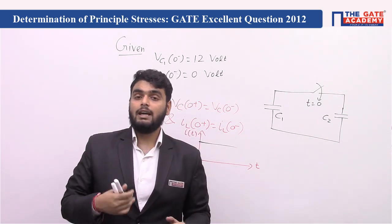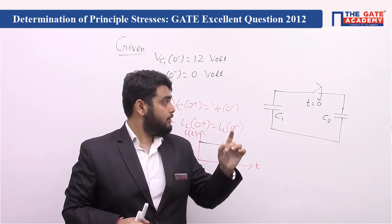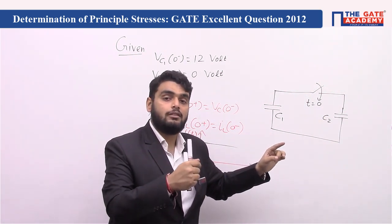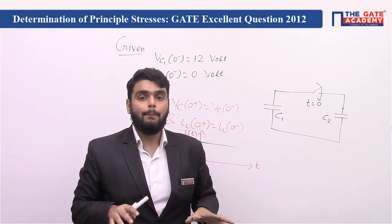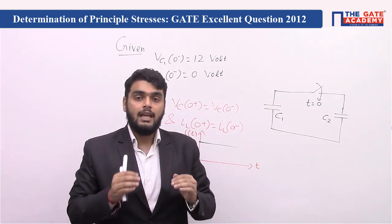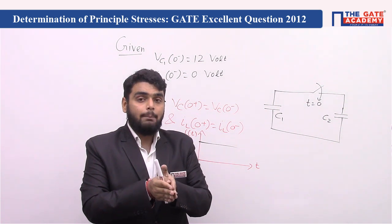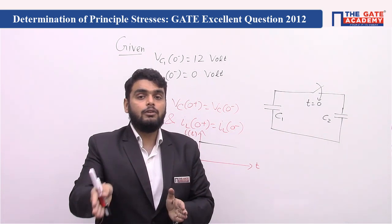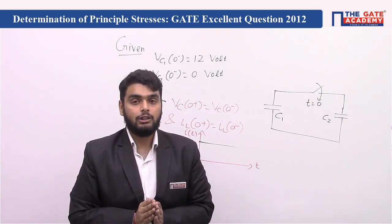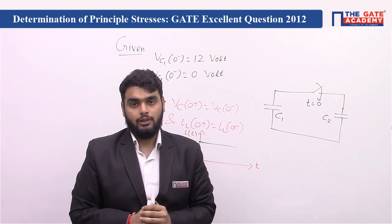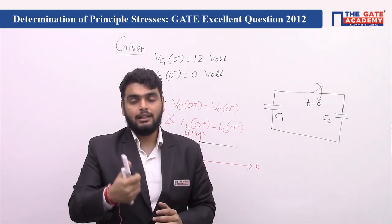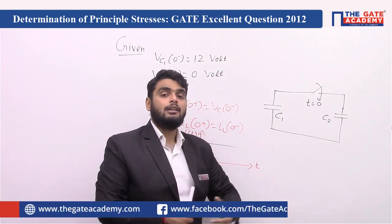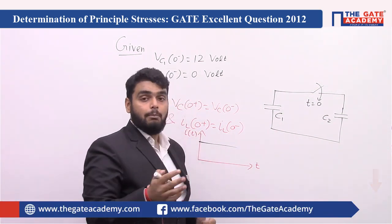Now see why impulse is the answer. As soon as the switch is closed, C1 starts to discharge and C2 starts to charge, and this happens in no time. In an instant, capacitor C1 reaches a particular voltage and in the same instant C2 reaches that same particular voltage. This means current flows only for an instant, and for an instantaneous current, the current is an impulse. That is why option D is correct — the current i(t) flowing through this network is an impulse function.